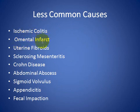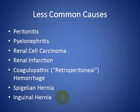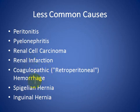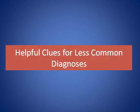Less common causes include ischemic colitis, omental infarction, sclerosing mesenteritis, Crohn's disease, abscess, rectosigmoid volvulus, appendicitis, fecal impaction, peritonitis, pyelonephritis, serosal carcinoma, renal infarction, hemorrhage, hematoma of the anterior abdominal wall, Spigelian and inguinal hernia, and bladder fistula.